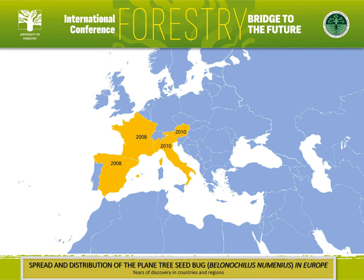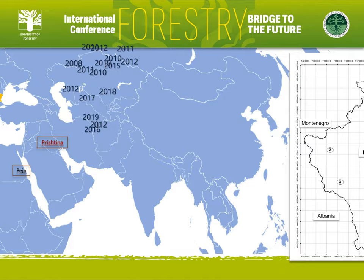Within less than 12 years, it has been recorded in most European countries. In 2019, along with the first find of the insect in North Macedonia, we reported that it was already widely established in natural, urban, and peri-urban plane trees throughout the country.